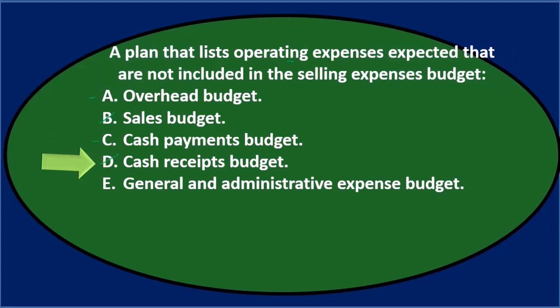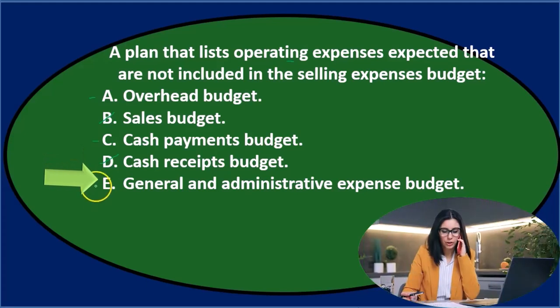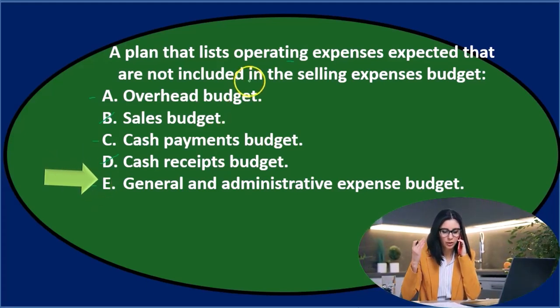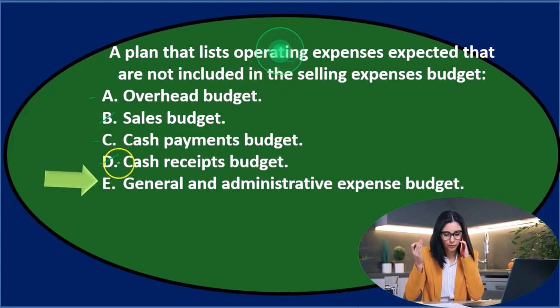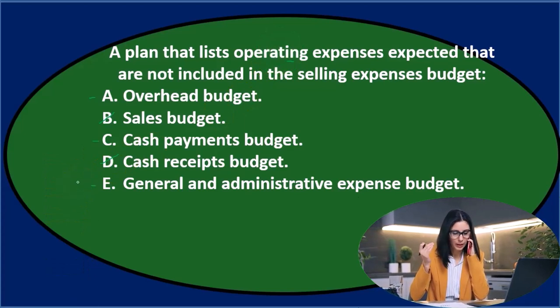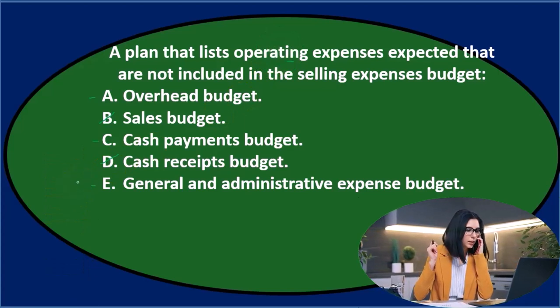That would be income typically. And then E says general and administrative expense budget — that's a type of expense budget, and it is an operating expense. So I'll keep that one for now. Remaining candidates: A, C, and E. Let's go through it again.